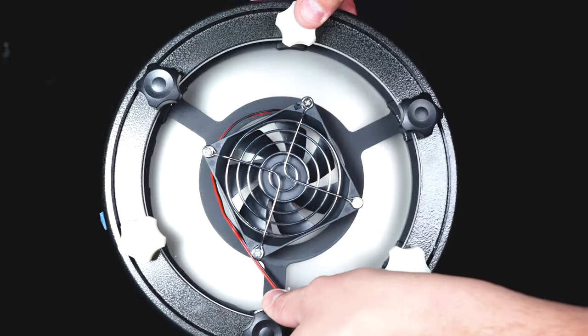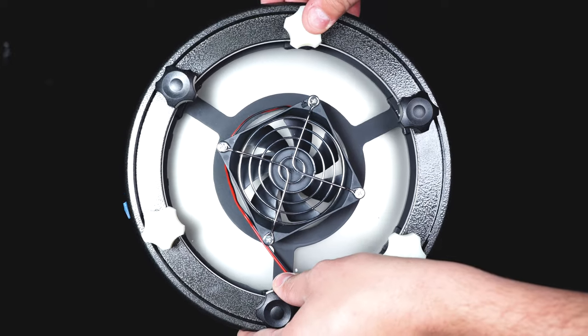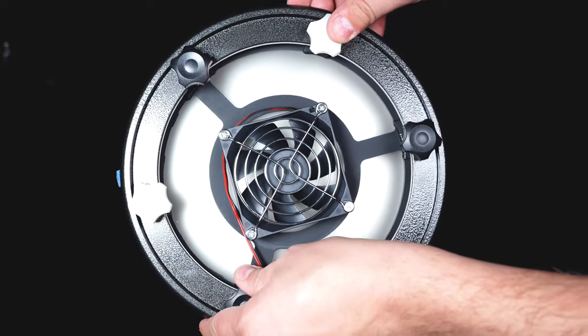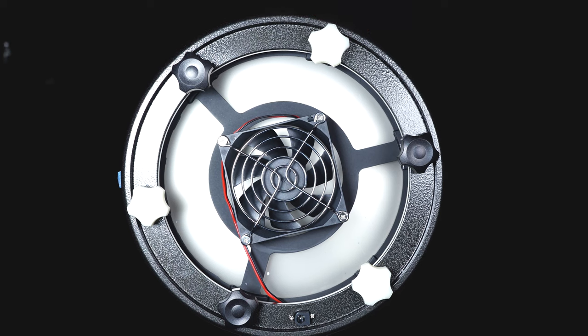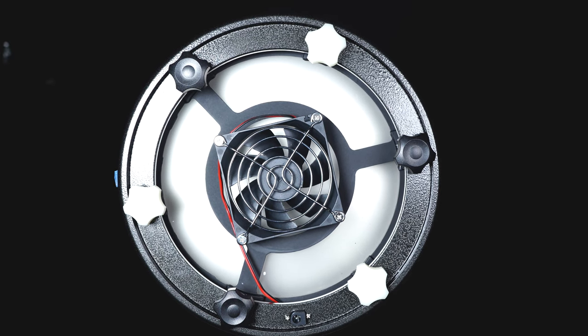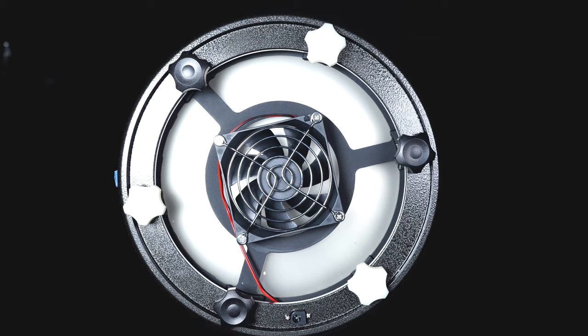Once you are finished we need to reinstall the primary mirror assembly. Align the mirror with your masking tape marker. Insert the screws and tighten in a clockwise fashion a little bit at a time until all your screws are secure.